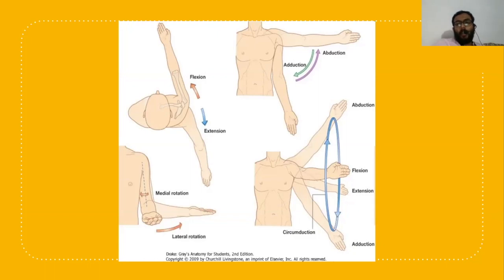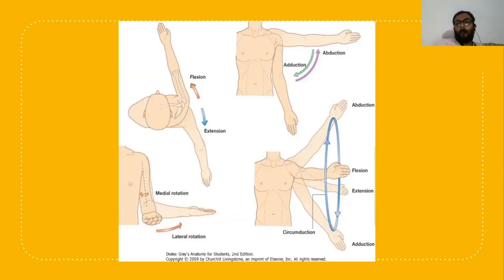Whenever there is pain in the final 30 degrees of abduction, it is due to acromioclavicular joint arthritis or acromioclavicular joint subluxation. In that condition, the final 30 degrees of abduction is arrested. So abduction itself gives more clinical diagnostic clues.